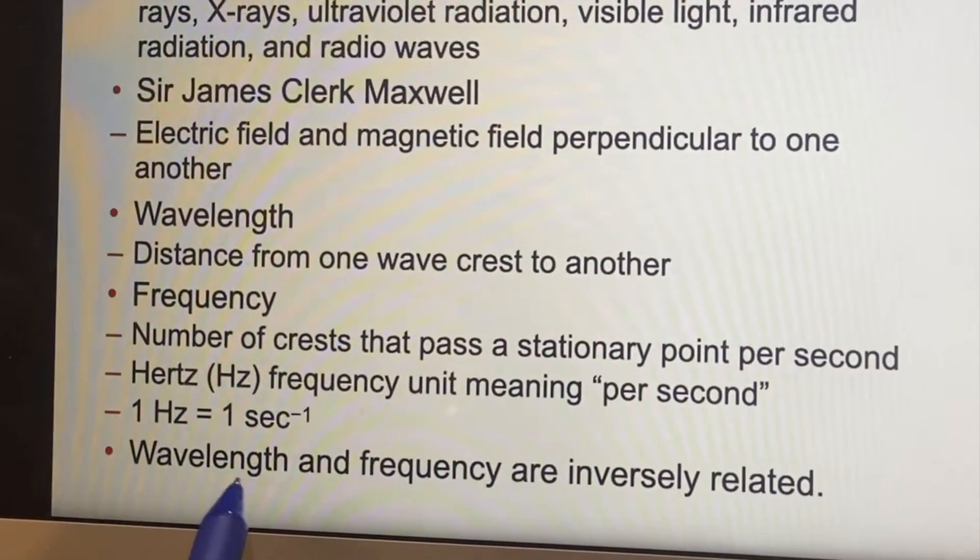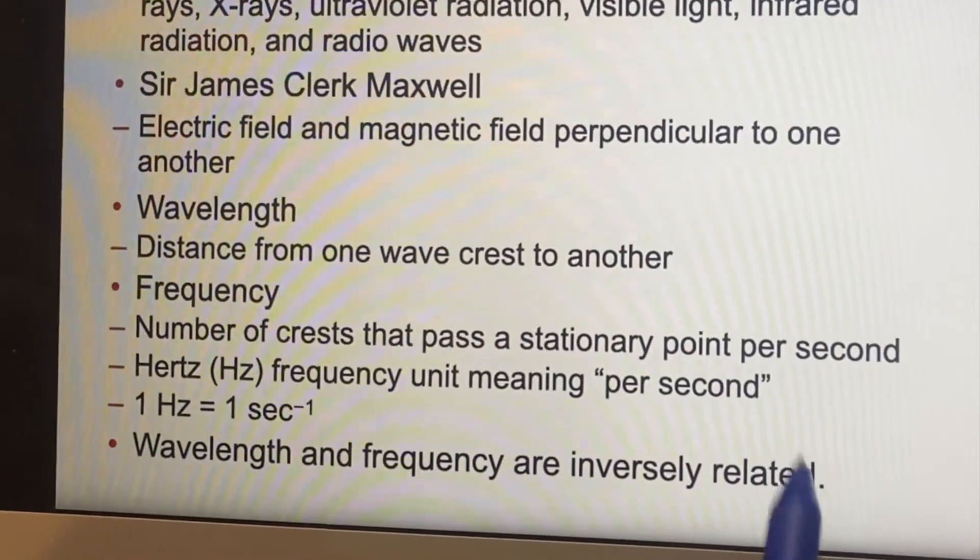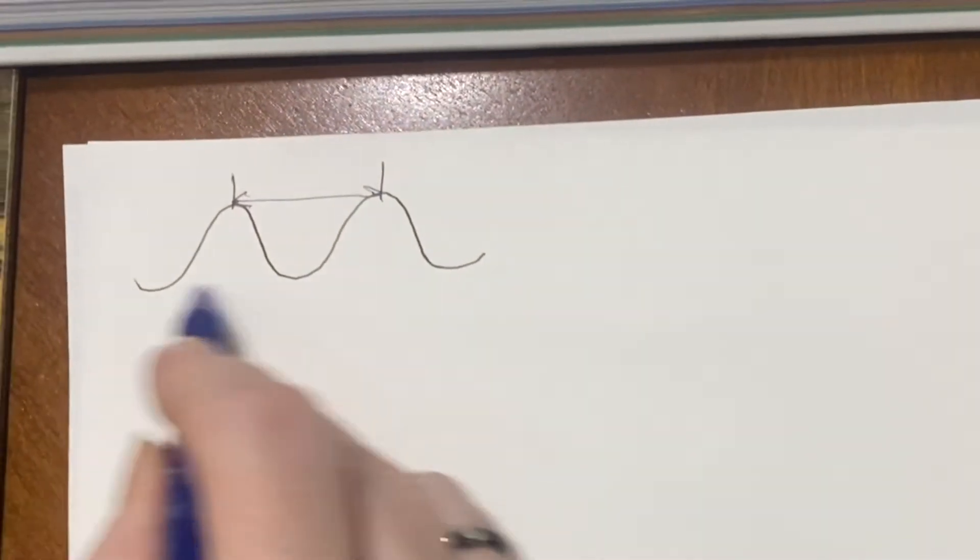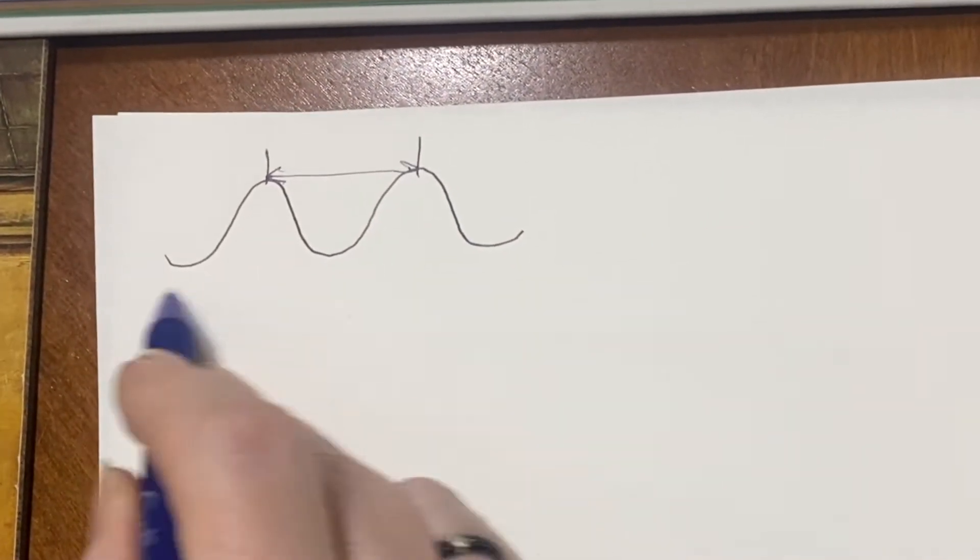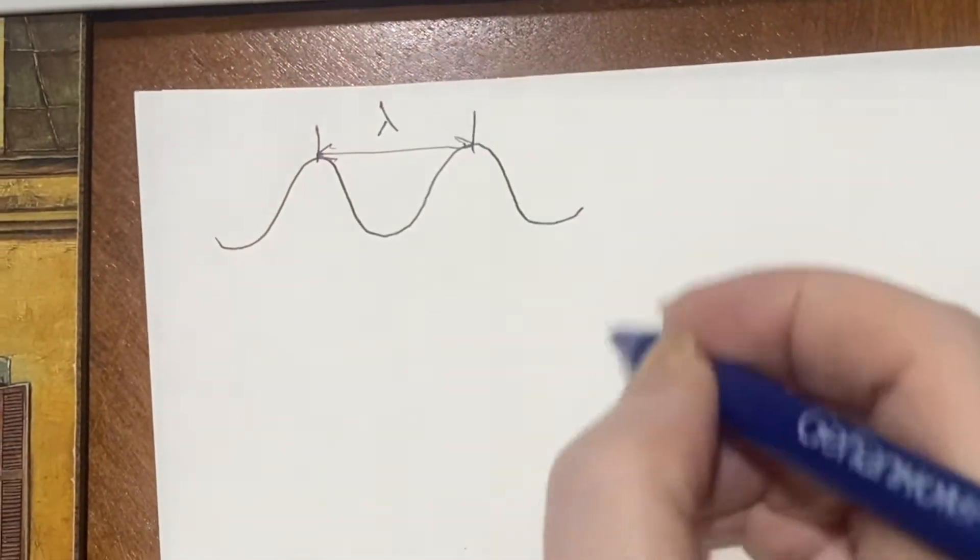Now, wavelength and frequency are inversely related. Well, why is that? If I have this right here as my wave, I could say this is a wavelength. That's its wavelength. It's moving.